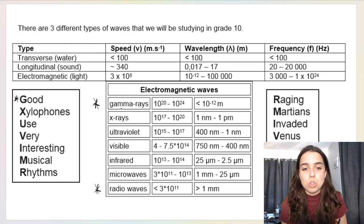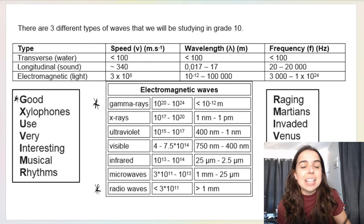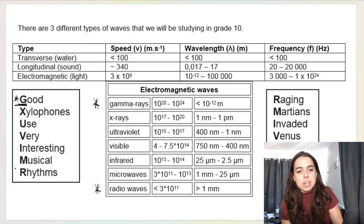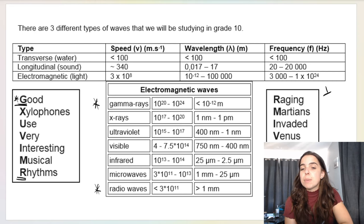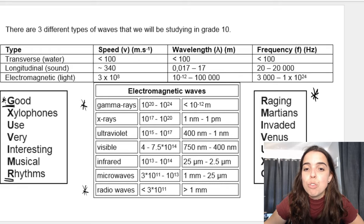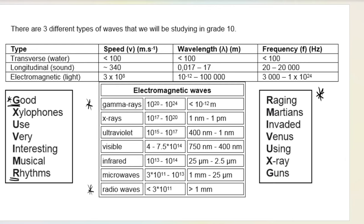There's a little acronym to help you remember the order. 'So good xylophones use very interesting musical rhythms' — that's to learn the order going from gamma rays (G) all the way down to radio waves (R). Or you can learn the spectrum in reverse order. Another acronym I know a lot of my students like is 'Raging Martians invaded Venus using x-ray guns.' Raging = R for radio waves, Martians = M for microwaves, I for infrared, and so on. You can learn the order of the spectrum using these little acronyms.